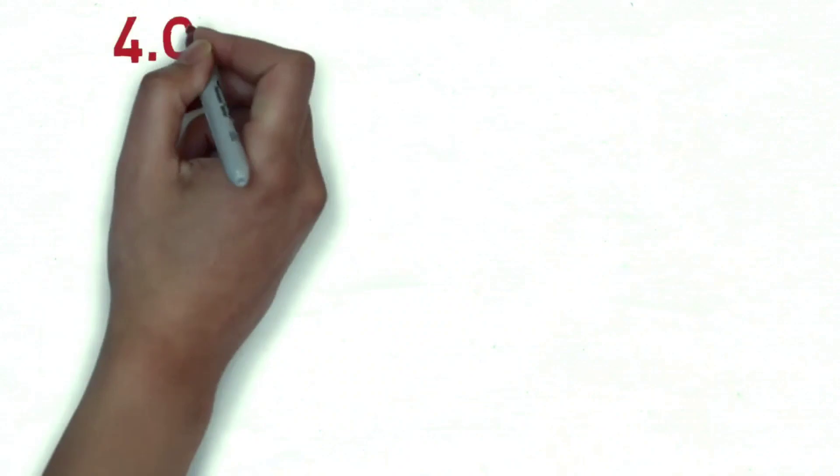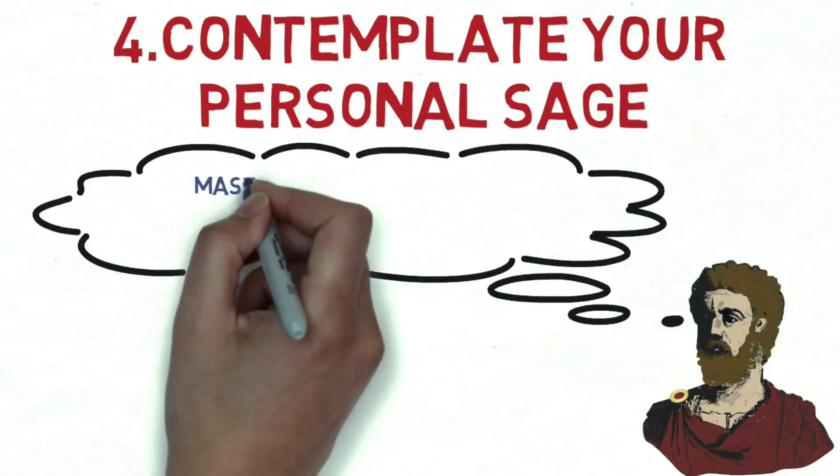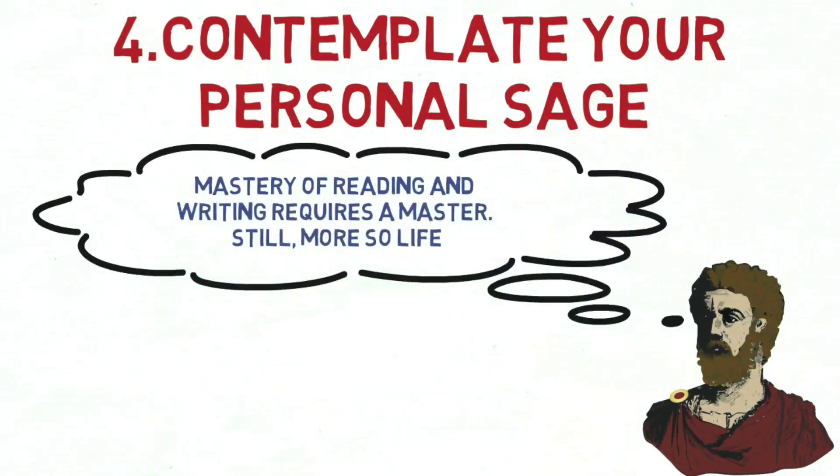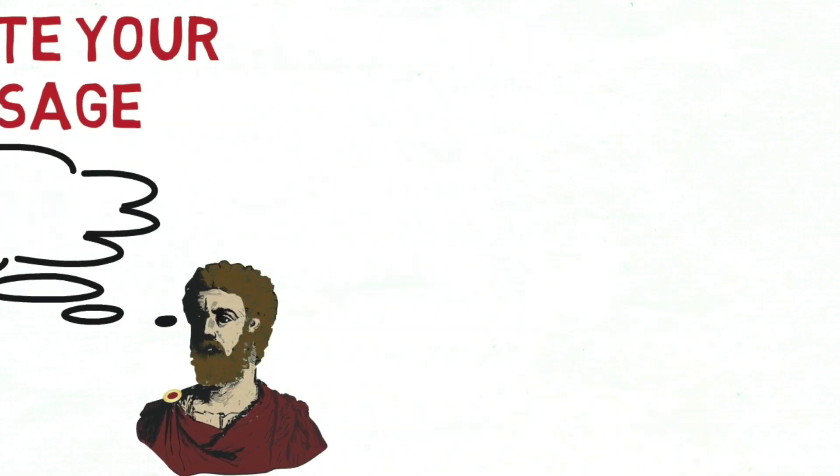4. Contemplate your personal sage. In the words of Marcus Aurelius, mastery of reading and writing requires a master, still more so life. A sage is someone who is considered to be wise or experienced in a certain field and who is revered for their wisdom, judgment and expertise. For many people this is a role model.